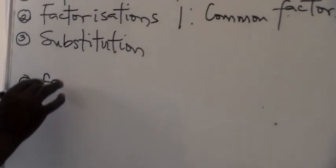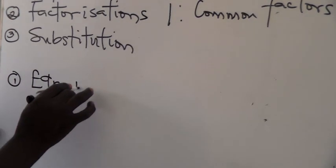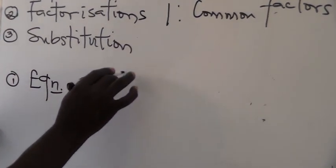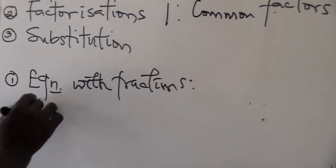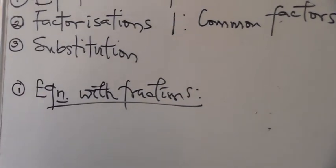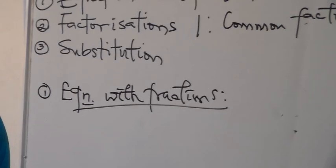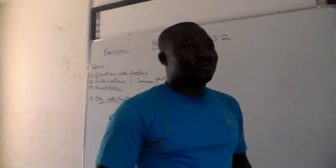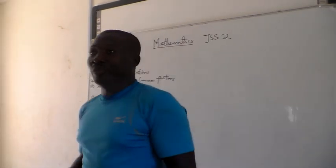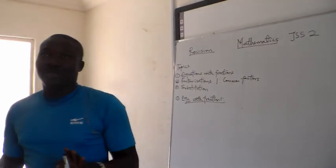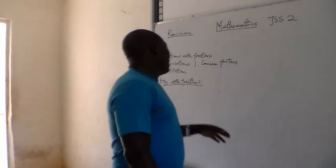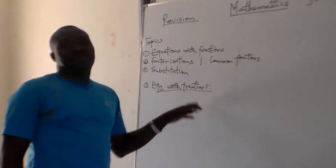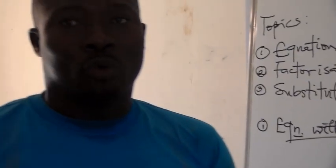Now to review, we have equations with fractions. What is an equation? An equation is a mathematical statement that tells us that two variables — or two quantities — are worth the same. And what is a fraction? A fraction is a part of a whole.